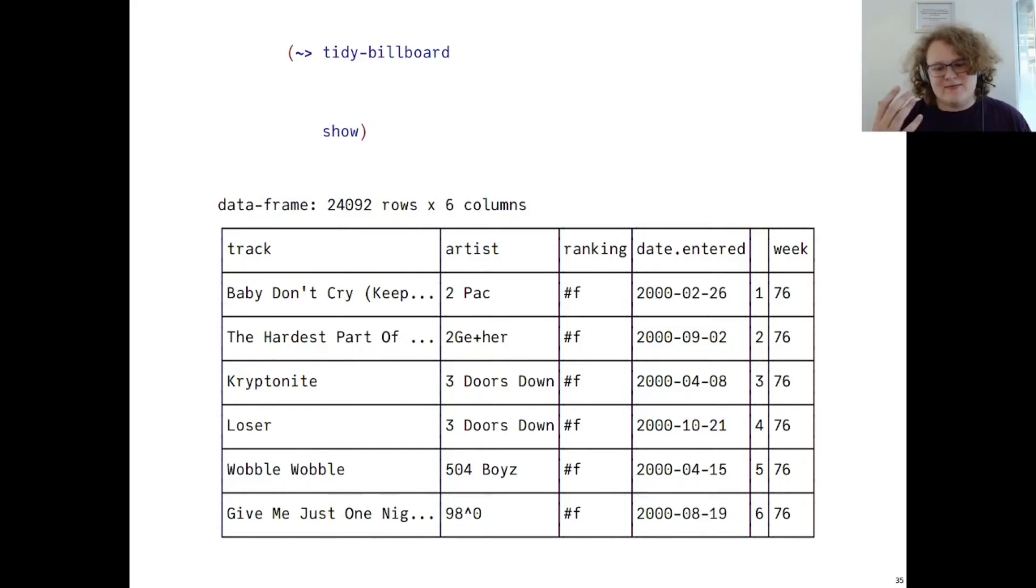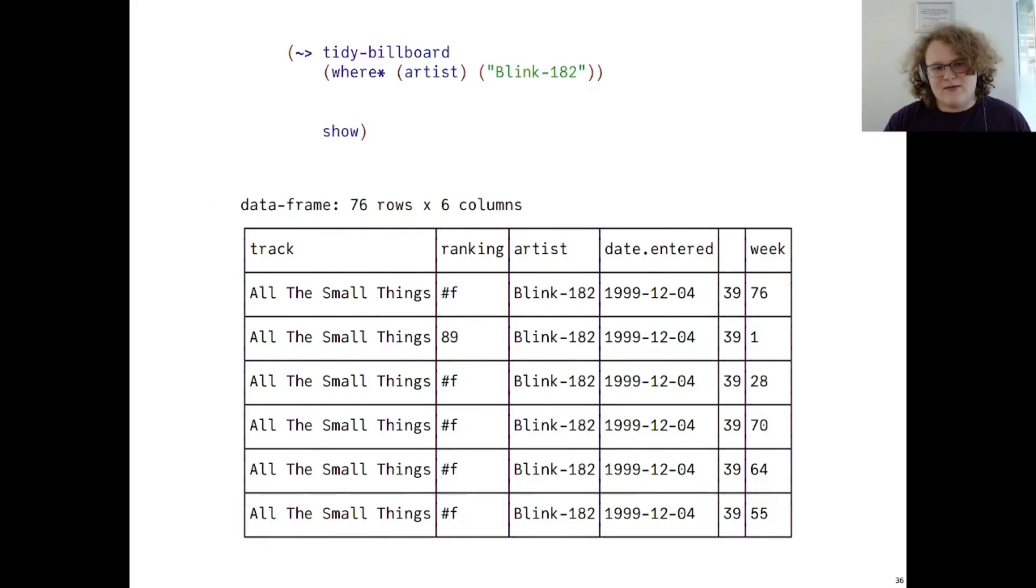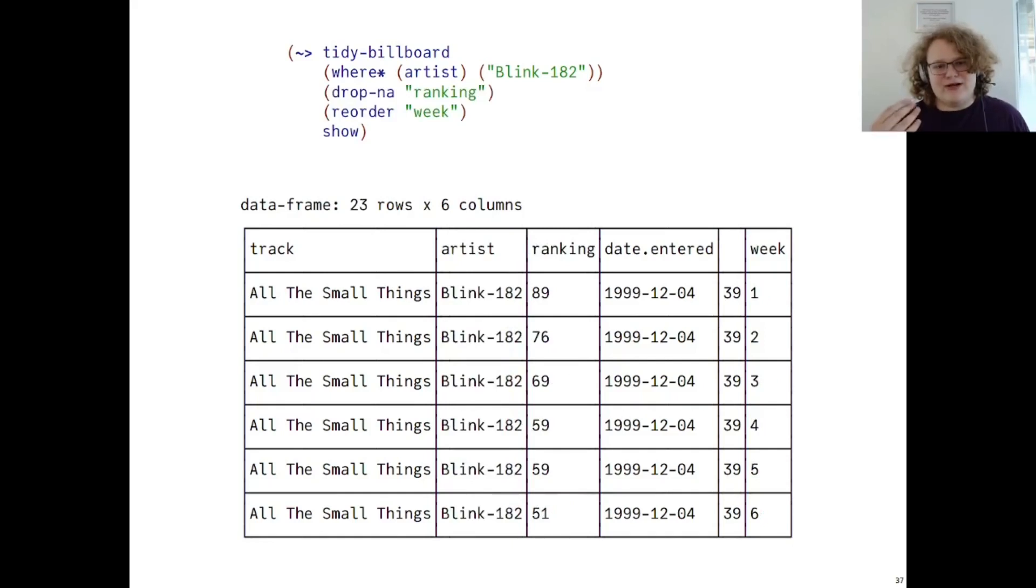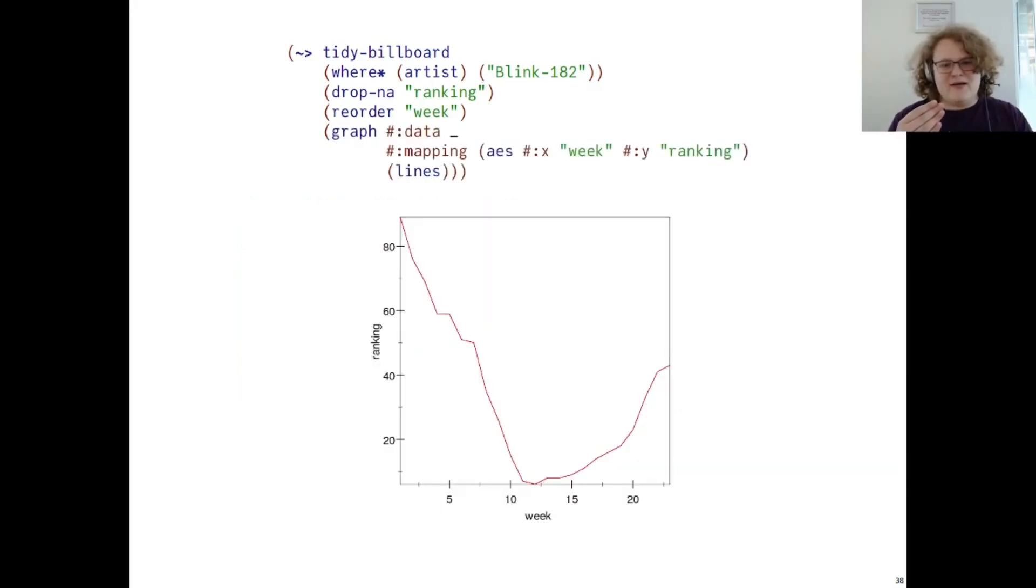Let's say we want to do some data analysis with it. For example, let's say we're big fans of Blink-182 and we want to know how they did in the year 2000, for nostalgia's sake. We can start off by filtering down this data into solely rows for the artist of Blink-182. We can now see that All the Small Things was the only song that was on the charts in this year. Then, what we want to do is get rid of all of these false rankings, because that represents that Blink-182 was not in the charts of that week. We can use the drop NA operator to do this, and then we can sort by week with the reorder operator, and we have something we can give to Graphite to make a time series. We can put this directly in our pipeline, mapping the x-axis to week and the y-axis to ranking, and draw a time series with the lines renderer, lower being better. And now we know how they did.